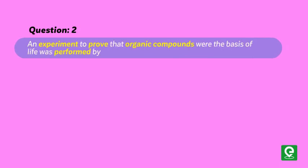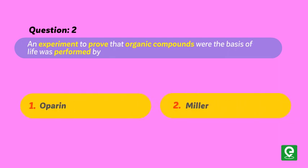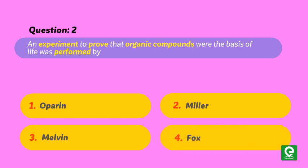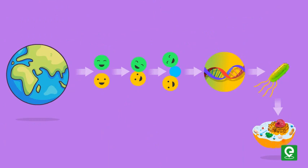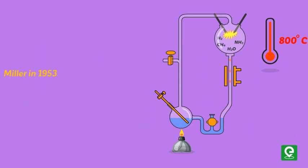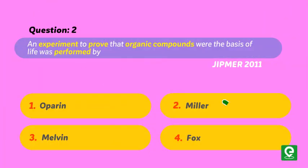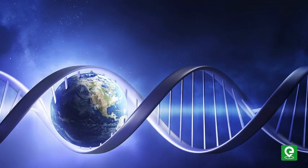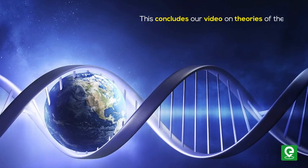Question two: An experiment to prove that organic compounds were the basis of life was performed by (1) Oparin, (2) Miller, (3) Melvin, or (4) Fox. This question was asked in GYPMA 2011. Solution: Oparin and Haldane gave the hypothesis of chemical evolution of life on Earth. Miller in 1953 conducted an experiment to prove the Oparin hypothesis. Hence, option two is correct.